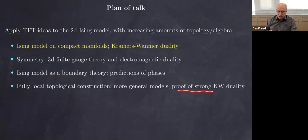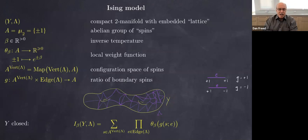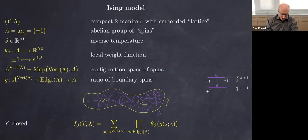Let's look at the Ising model on a compact manifold with a lattice inside. In the paper we formally define this as an embedded finite graph. The model depends on a group — here we start with the abelian cyclic group of order two — and temperature as the parameter, giving a function on the group: at plus one it's e^{+beta}, at minus one it's e^{-beta}. The spins are again maps from the vertices into this group.